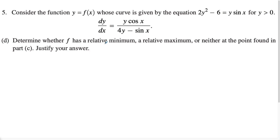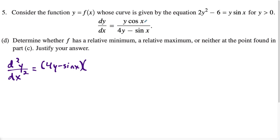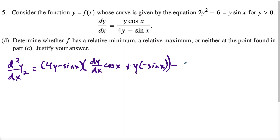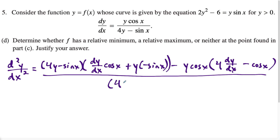For the last part, we want to determine if f has a relative minimum, maximum, or neither. We won't use the first derivative test because dy/dx is in terms of both y and x, so it's easier to use the second derivative test. Finding the second derivative using the quotient rule: we have the low function four y minus sine x, times the derivative of the numerator. The derivative of y cosine x is dy/dx times cosine x plus y times negative sine x.